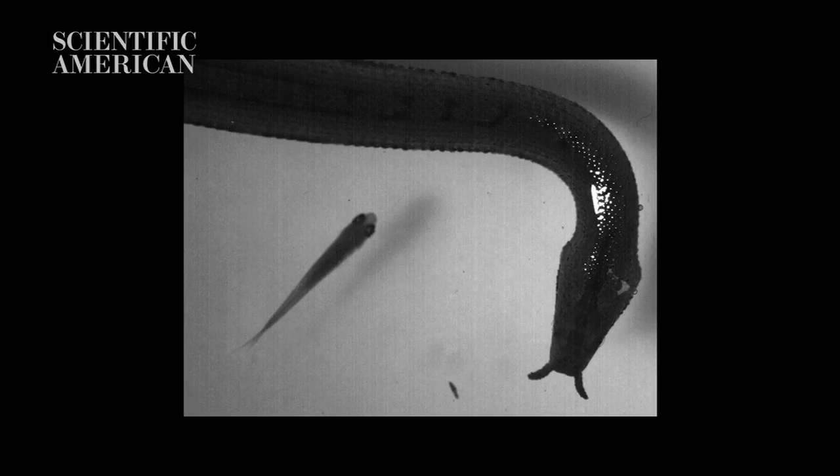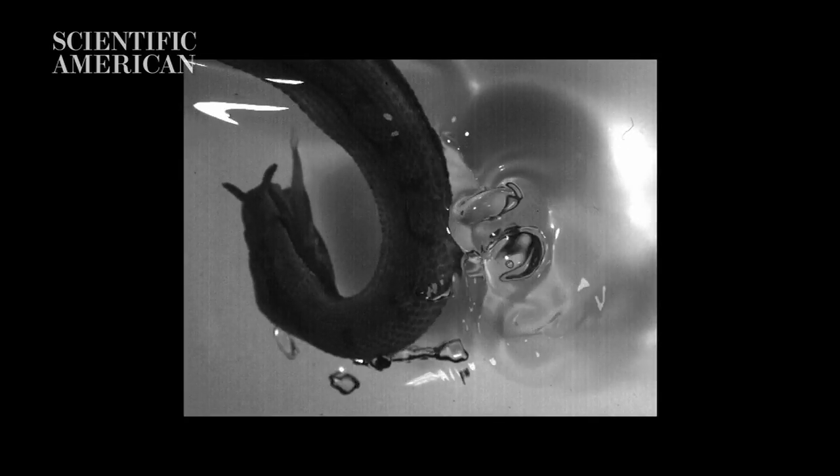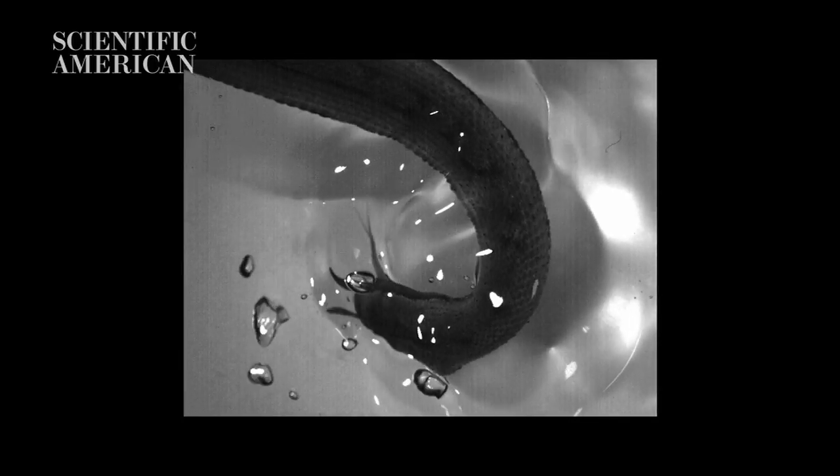Most of the time this mechanism works in the fish's favor. But the tentacled snake creates a false wave, causing the fish to dart in the wrong direction and straight into its waiting jaws.